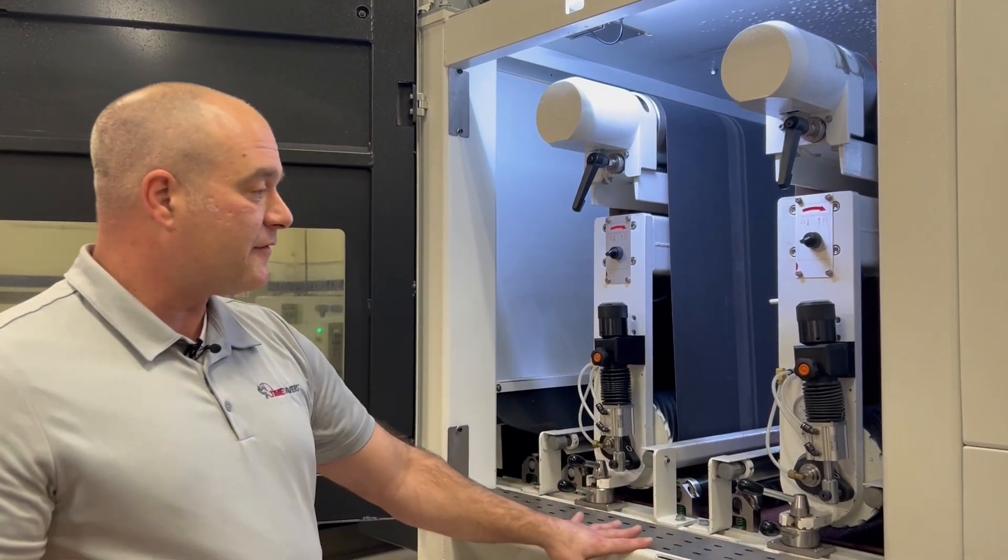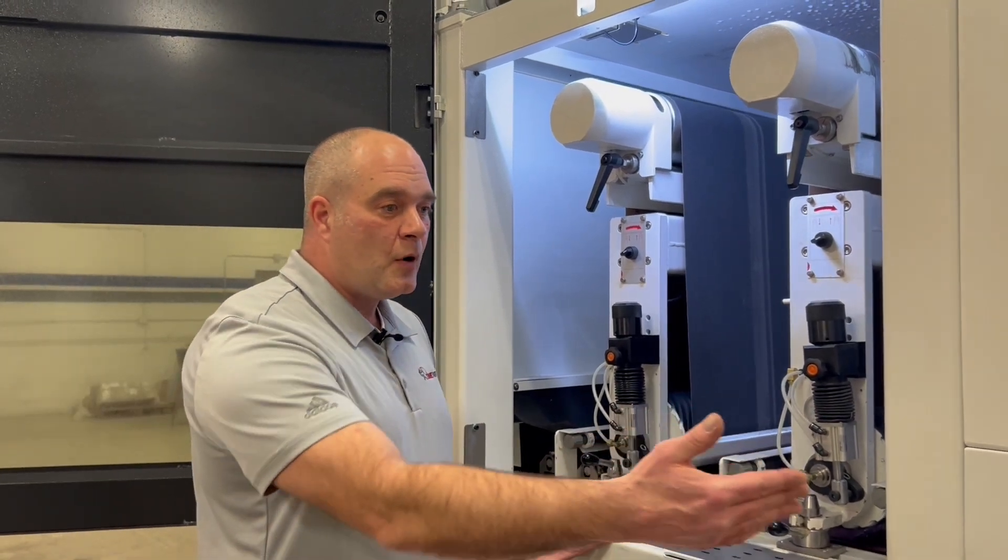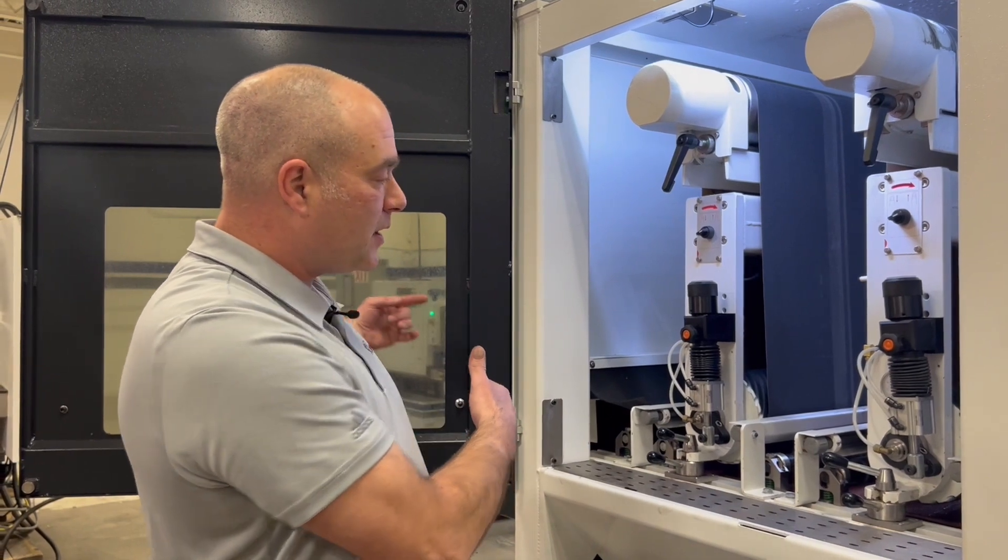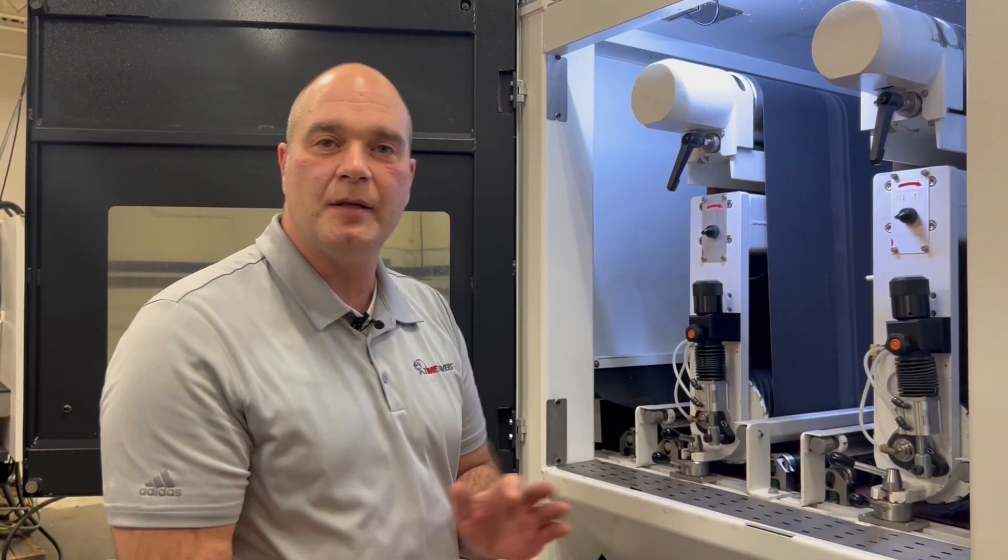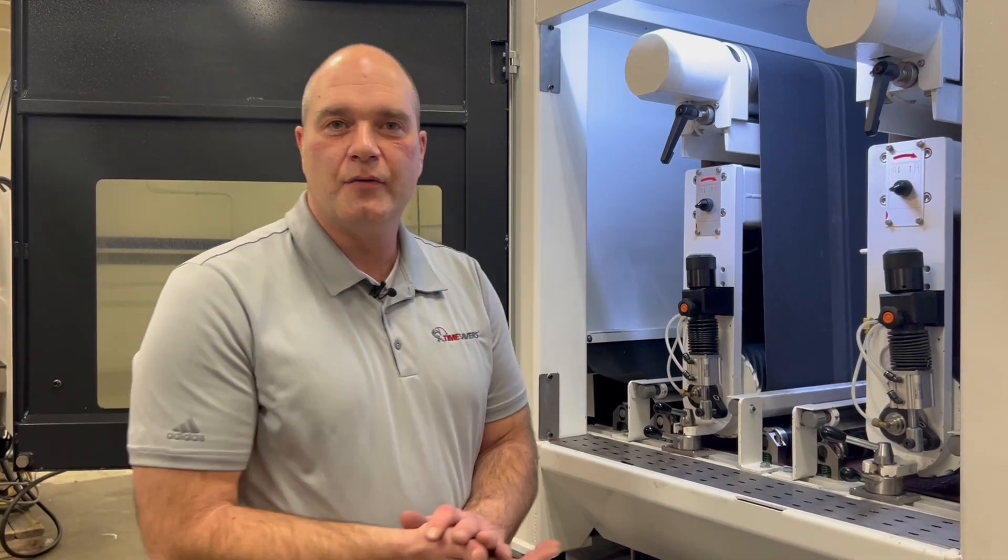This machine also does have a reversing conveyor on it, so we can process parts through this machine and then once they come back we can actually bring it back through to the infeed side again and take a second pass if need be for some dimensioning work or maybe some finishing work on tube steel. I do have some tube steel here and I will run it through later on in this video to show you its capabilities.